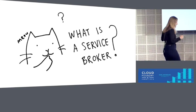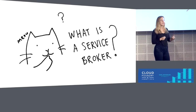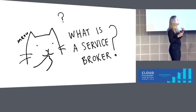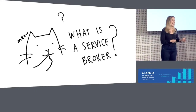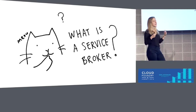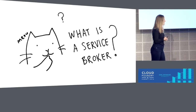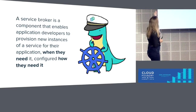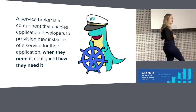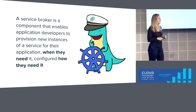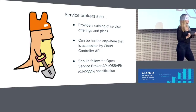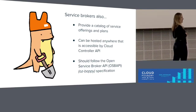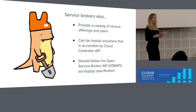A services marketplace is comprised of service brokers that have been registered in the platform by the operator. But what is a service broker? It can be implemented in many different ways, but at its core it's a REST API that speaks HTTP, and its primary client is the cloud controller. A service broker enables application developers to provision new instances of a service for their application when they need it, configured how they need it. Service brokers also provide a catalog of service offerings and plans that you can put on the marketplace. It can be hosted anywhere that is accessible by the cloud controller API, and it should follow the OSBAPI specification.